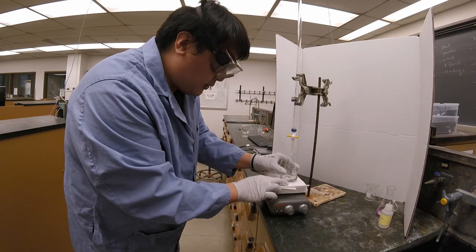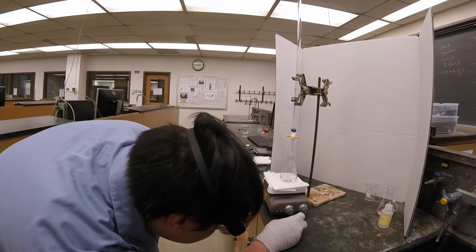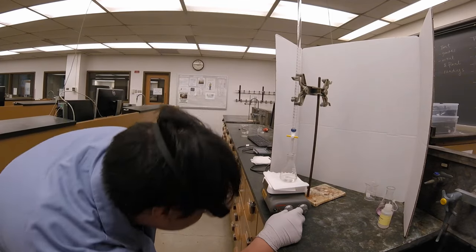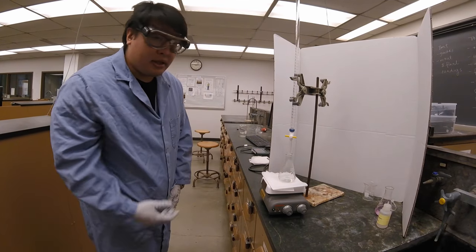Once the Erlenmeyer flask is on the stir plate, you want to turn the setting on to stir, and then we're going to do the titration.